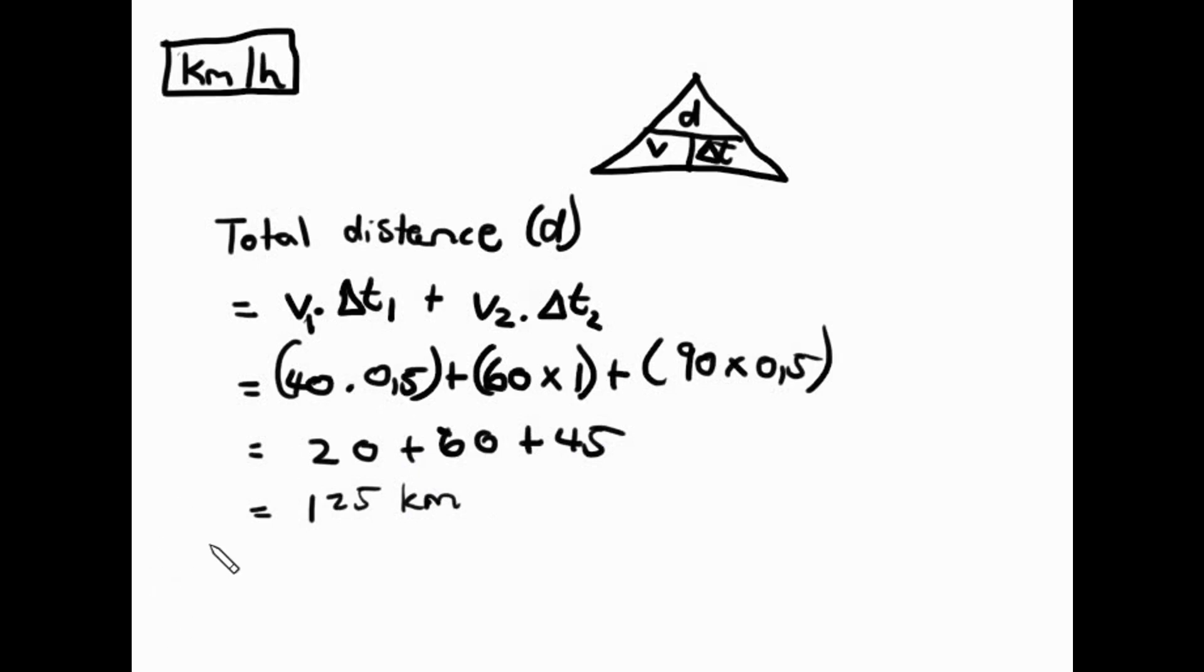We've kept everything in kilometers here for this question. Sub it into our formula. D over T. We get an answer. We get equal to 125 kilometers over our two hours. And that equals to an answer of 62.5 kilometers per hour. And that's our answer.